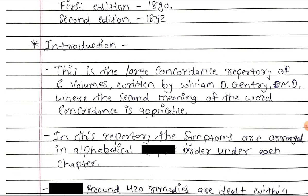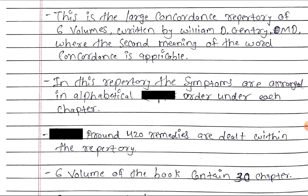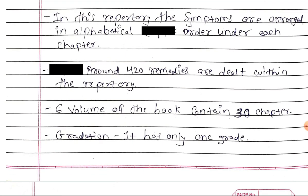Introduction: This is the large concordance repertory of six volumes written by William D. Gentry, M.D., where the second meaning of the word 'concordance' is applicable. In this repertory, the symptoms are arranged in alphabetical order under each chapter. Around 420 remedies are dealt within the repertory. The sixth volume of the book contains 30 chapters.